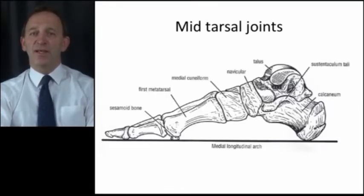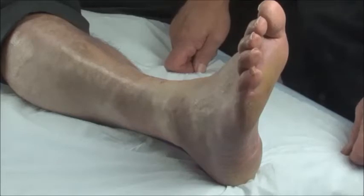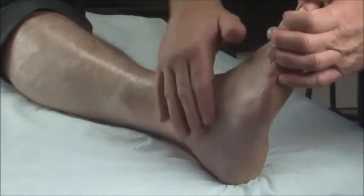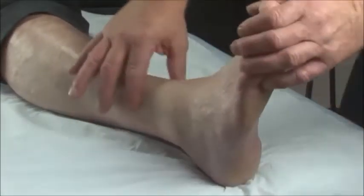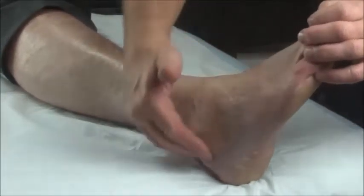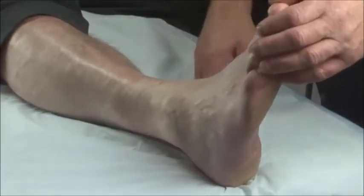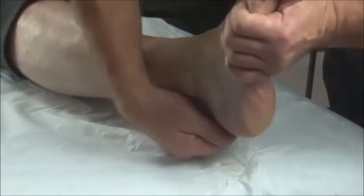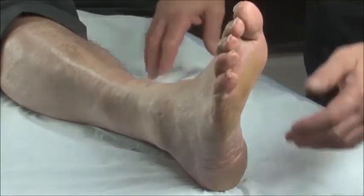I'm going to show you how to examine the ankle as comprehensively as you need to in order to identify where the pathology is. First, take a look around the ankle to see if there's any obvious sign of inflammation and feel whether all the landmarks, especially the bony prominences of the medial and lateral malleoli, show any visible swelling. Also feel down the Achilles. I'm now going to isolate the three joints of the ankle.